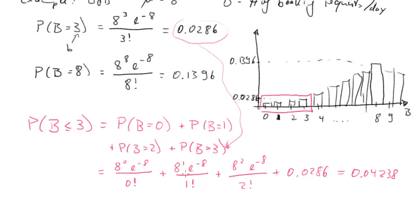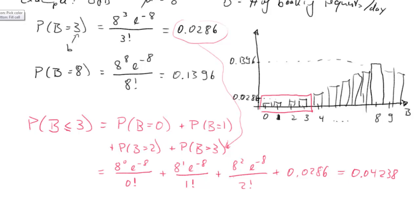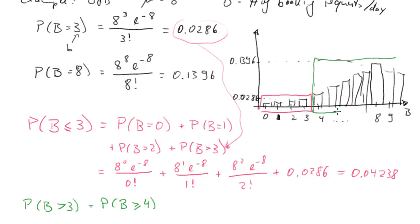It goes without saying that you should check that you can reconstruct these results. Now we can immediately calculate the complementary probability: P(B > 3), which is the same as P(B ≥ 4). Graphically, this will be the sum of all the remaining probabilities — continuing for all values you can't see in this graph.